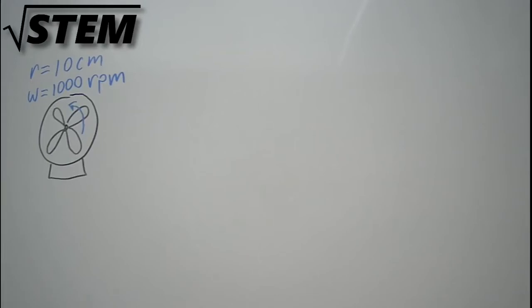Let's look at a fan with a radius of 10 centimeters that spins at 1,000 revolutions per minute or RPM. And specifically what we want to find is the velocity of the tip of each fan blade, the acceleration at the tip of the fan blade, and the time it takes to go around one time or the period t.